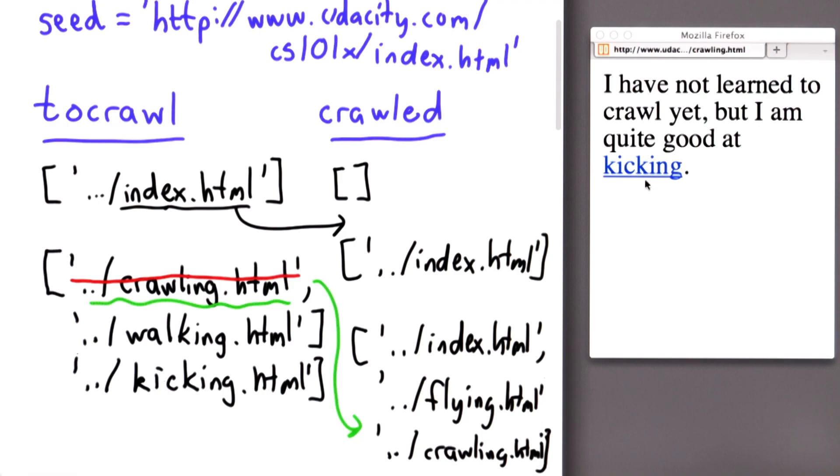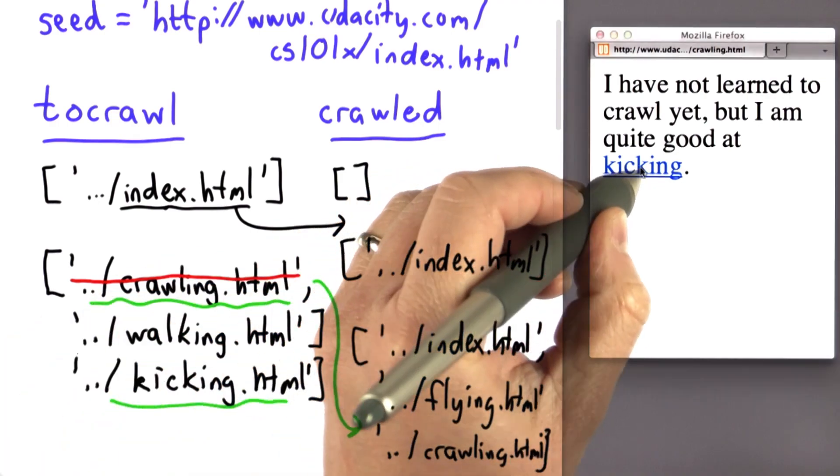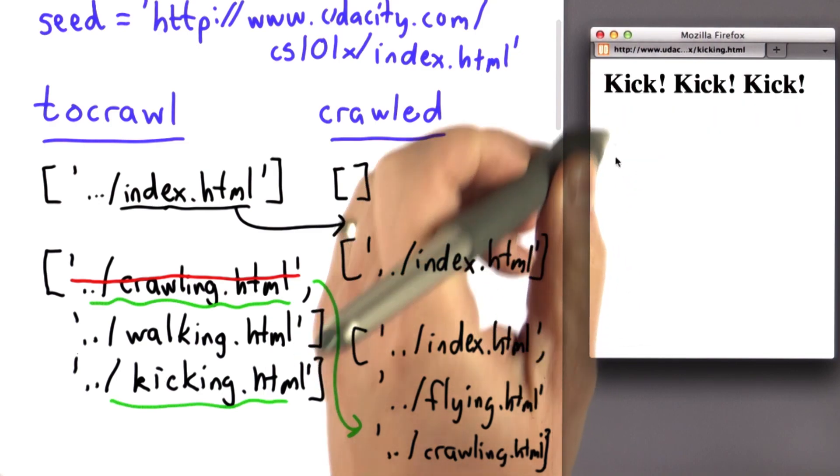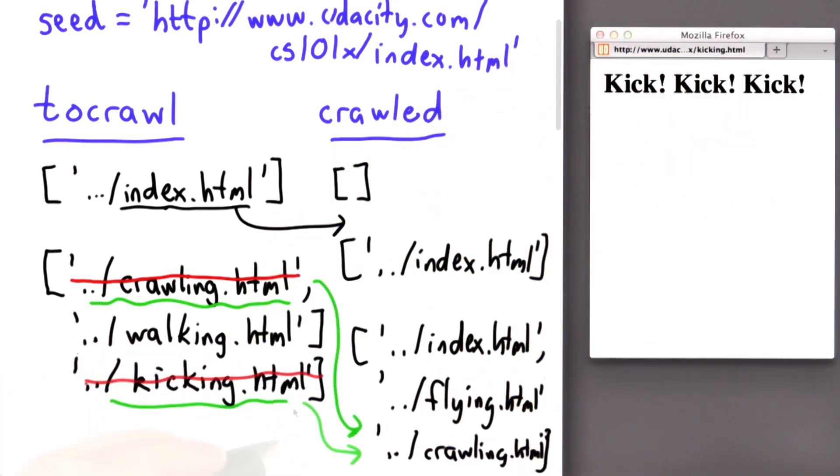And now we keep going. And we're going to keep going. We'll follow kicking. We find that kicking does not have any links. So that would add kicking to the crawled list and remove it from the to crawl list. And we're going to keep going until we have no more pages to crawl. So let me describe that process a little more formally, and then I'll ask you a question about it.